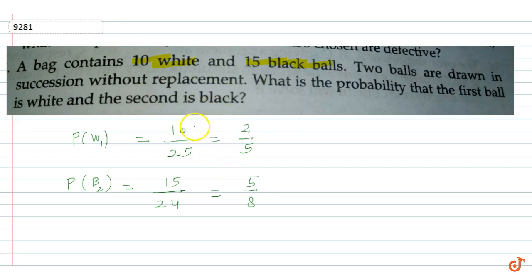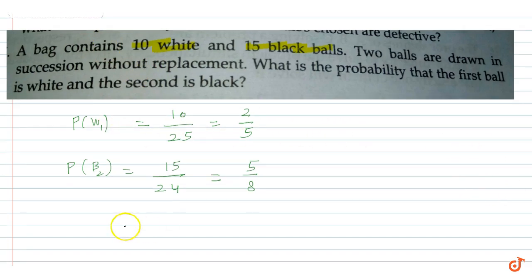So what is being asked is that the first ball should be white and the second should be black. These are two independent events, so we need P(W₁ intersection B₂), which is equal to probability of W₁ into probability of the second black.